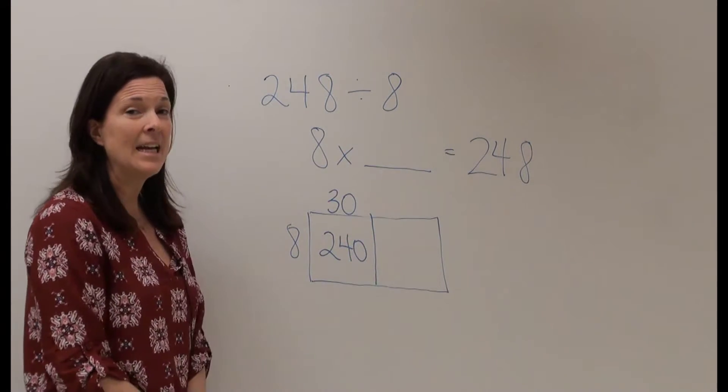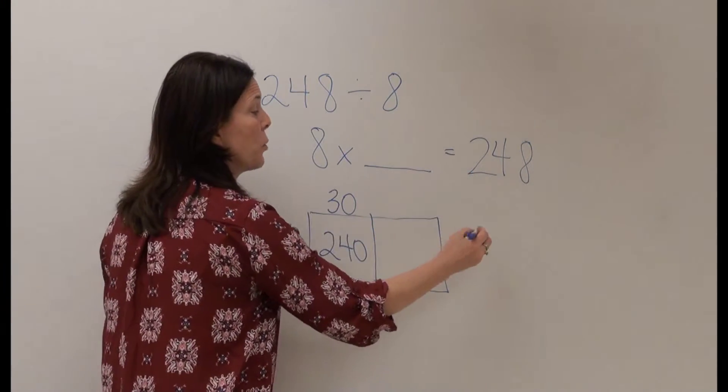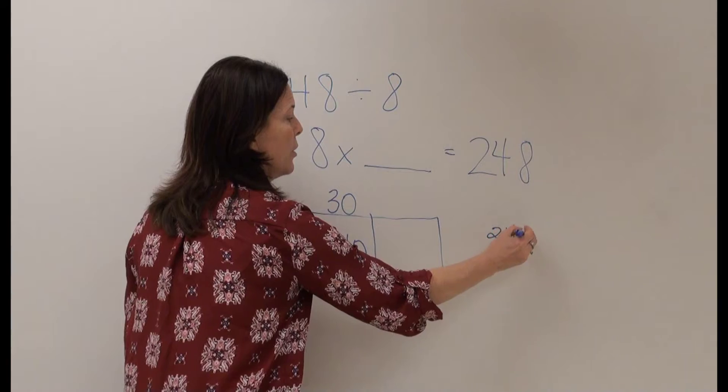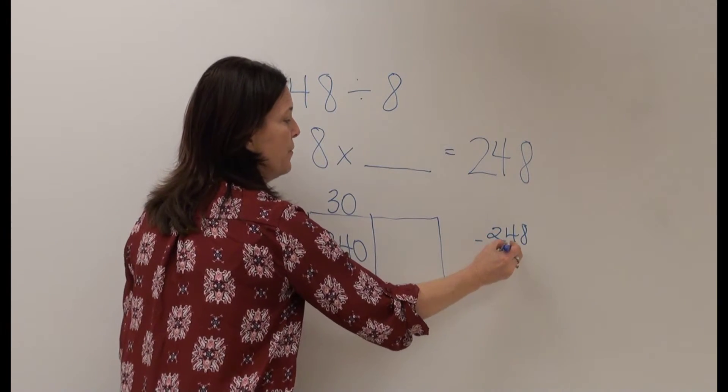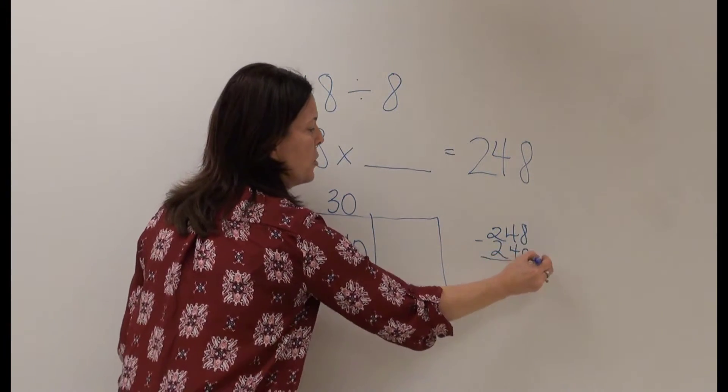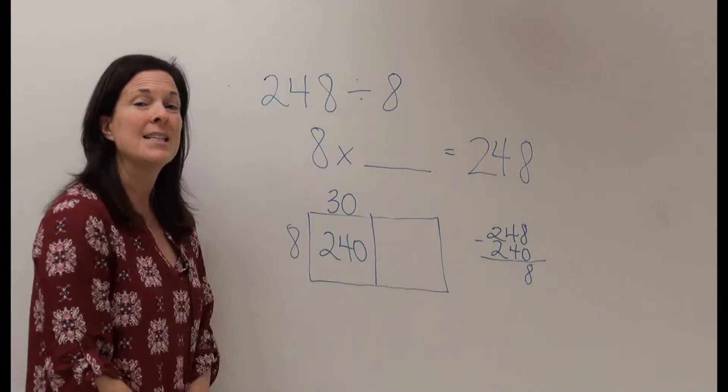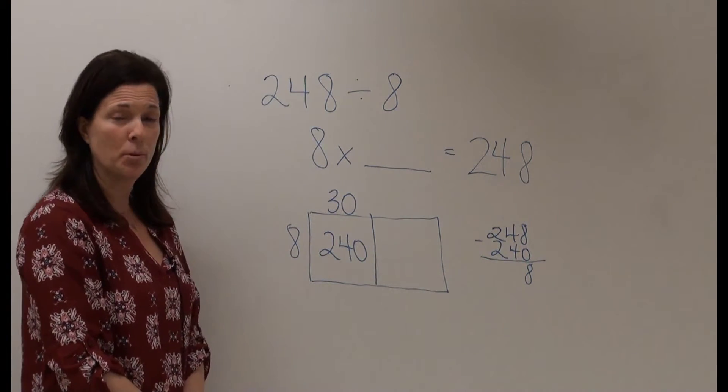I need to put 248 students in rows. So far I have placed 240. That means I have 8 students left to put into rows.